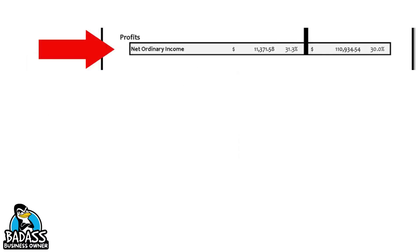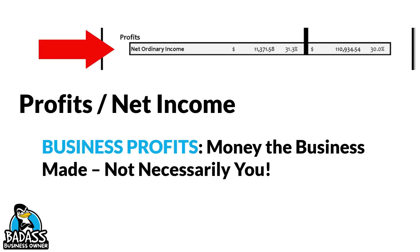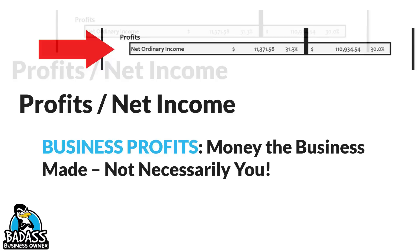The final section is called profits, and this is the line we all love to see. Sometimes it'll say profit, sometimes it'll say net income — just know that they are the same thing. At the end of the day, they are the business's profits. Now keep in mind, it's the money the business made, not necessarily you. The business still has things to do — it has to spend this money on a few things before you can start taking money out of it. It's going to go to three things: first off, you've got to pay your taxes.